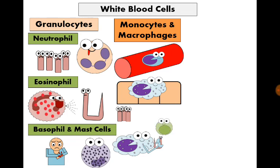For T-lymphocytes to form an effect against certain microbes, they must first identify those microbes. Certain cells like macrophages act as antigen-presenting cells: the macrophage engulfs the microbe, digests it, and presents small parts of the microbe called antigens on its surface attached to certain receptors. This complex of antigen attached to receptors on the macrophage surface can activate the T-lymphocyte to start functioning. This is called antigen presentation.